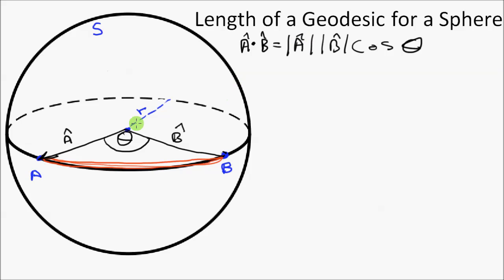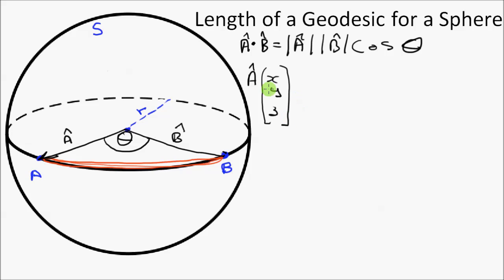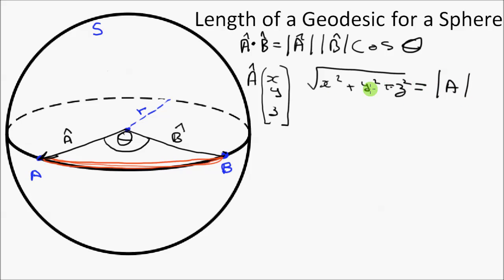The magnitude is the length of the vector. It is the same as the radius, since this is the unit sphere. If the vector A is written in component form as (x, y, z), then the magnitude of vector A is the square root of x² + y² + z².